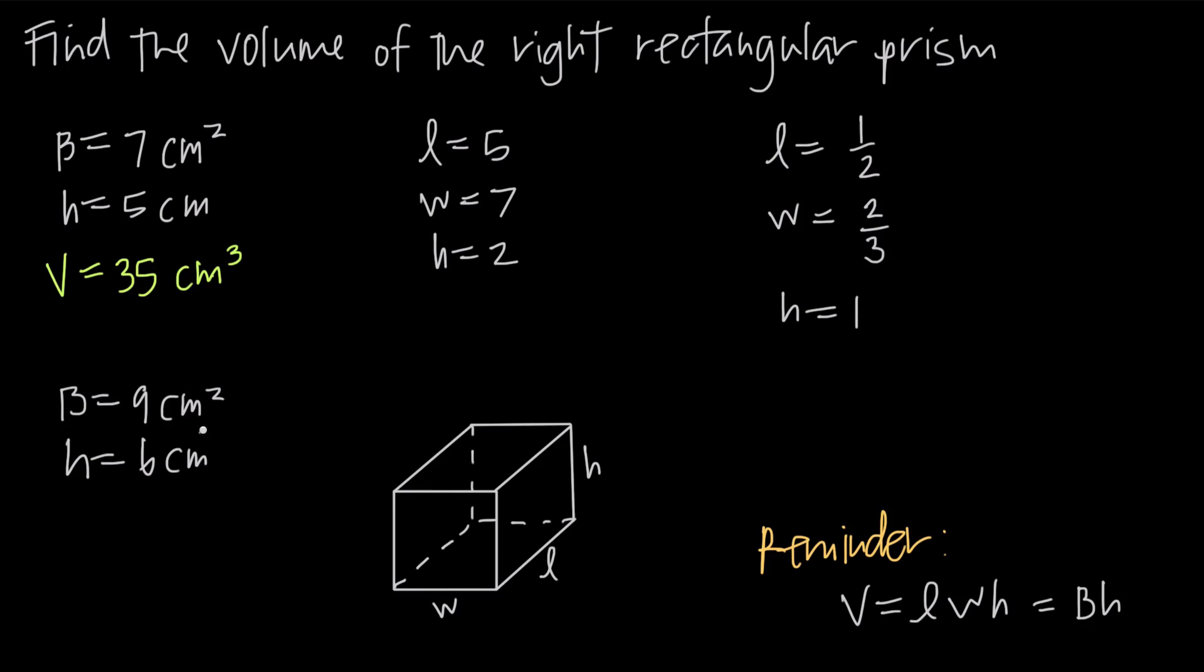Same thing here with this example. The area of the base is 9 square centimeters. The height is 6 centimeters. So my volume is going to be 9 times 6, or 54 cubic centimeters.